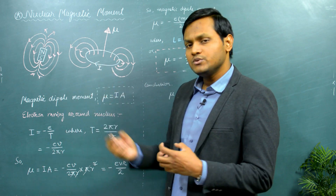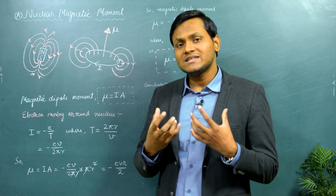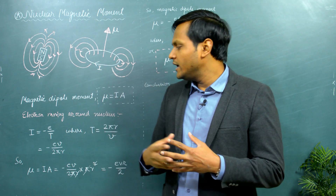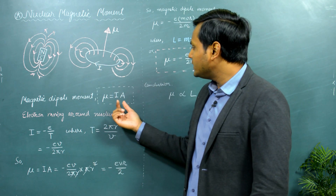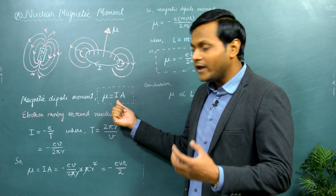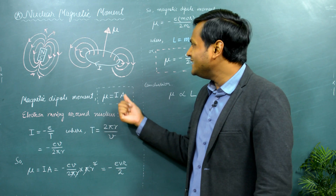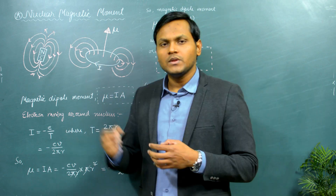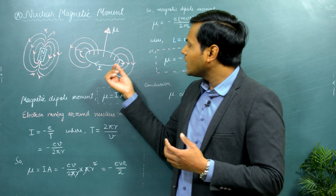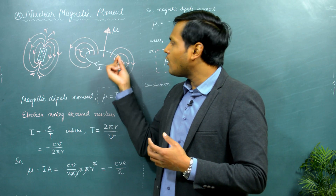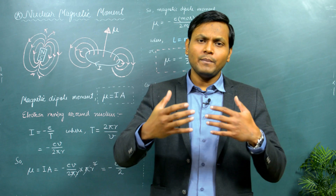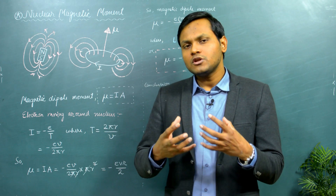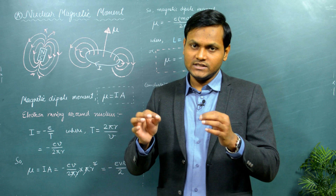The magnetic moment, which will basically give us an idea about the strength of its magnetic field and the orientation of this magnetic field, is given by the current of the wire multiplied by the area of this particular loop itself. This kind of an example of a current moving around a circular loop can also be compared to other physical examples — for example, the motion of an electron around a nucleus.